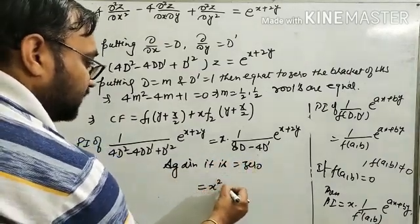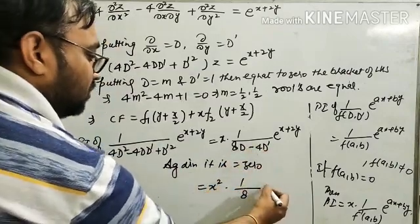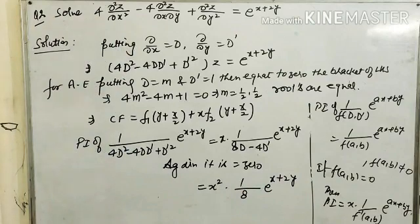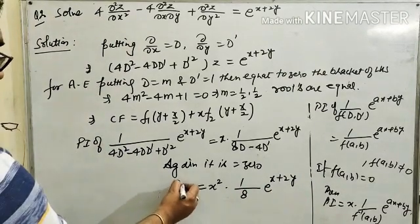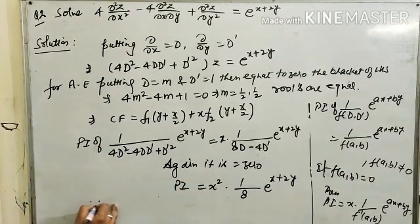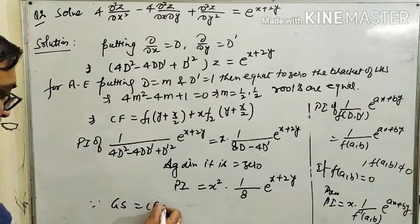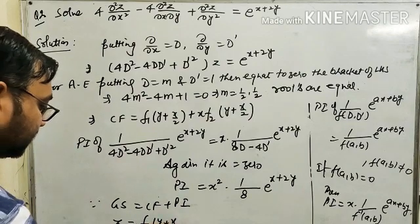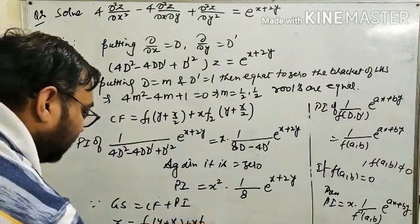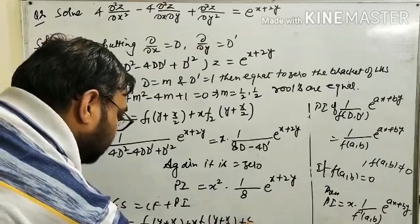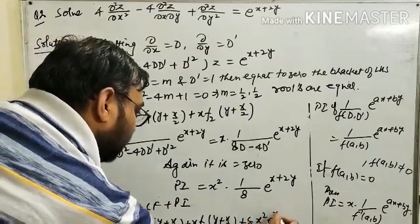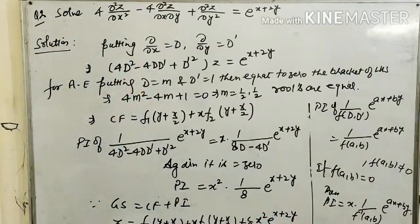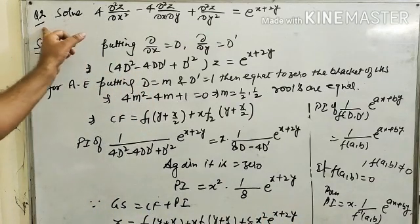Again, multiply by x and differentiate with respect to D, giving x² times 1 upon 8 times e^(x+2y). Now the constant term exists, so the PI equals (x²/8) e^(x+2y). The general solution is z equals f₁(y plus x/2) plus x·f₂(y plus x/2) plus (x²/8)e^(x+2y). This is the second question based on the first formula, illustrating when the PI condition fails.